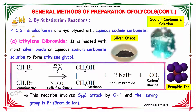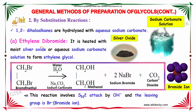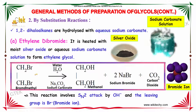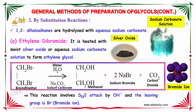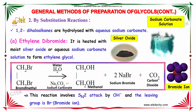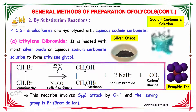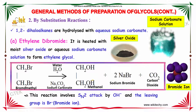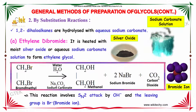In substitution reactions, 1,2-dihaloalkanes are hydrolyzed with aqueous sodium carbonate. For example, ethylene dibromide is heated with moist silver oxide or aqueous sodium carbonate solution to form ethylene glycol. Taking bromomethyl as an example, on addition of water and sodium carbonate, we obtain methanol, because the OH groups in water replace the bromine ions. Sodium bromide and carbon dioxide are obtained as side products. This reaction involves an SN2 mechanism, where OH minus acts as the nucleophile and bromine is the leaving group.